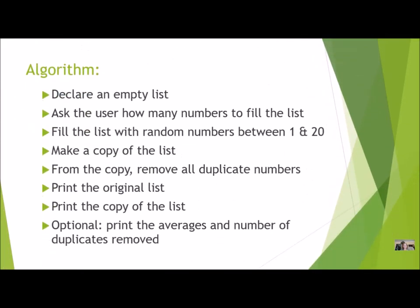Here's your algorithm — your step-by-step list. First, you're going to declare an empty list. You're going to ask the user how many numbers to fill the list, and then fill the list with random numbers between 1 and 20. These are all things you should be really comfortable doing by now. You're going to make a copy of the list — you can make the copy first and then remove the duplicates, or make the copy as you are removing the duplicates. Then you're going to print the original list and the copy. If you get a chance, print the averages and the number of duplicates removed. The only thing that might require some thought is removing the duplicates.